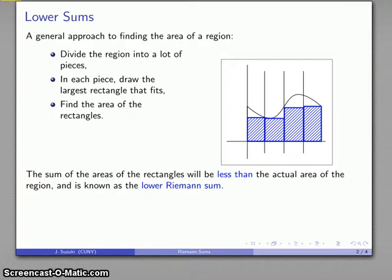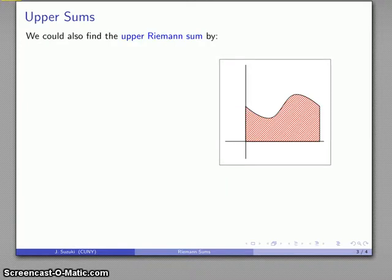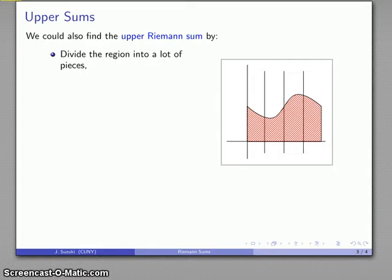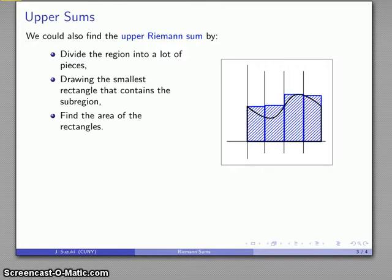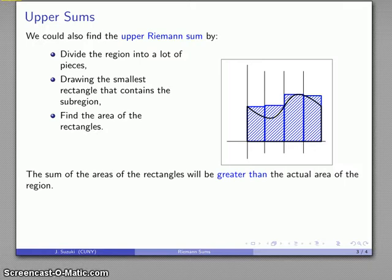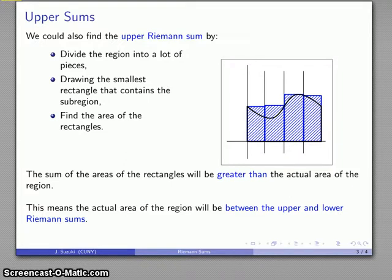Likewise, I can find the upper Riemann sum in almost exactly the same way. I divide the region into pieces, but this time I draw the smallest rectangle that contains each sub-region. Imagine you're shipping these pieces — you want to find the smallest box that fits. The significance here is that the sum of the areas of those rectangles will be greater than the actual area of the region, giving me the upper Riemann sum.